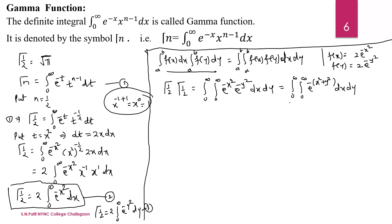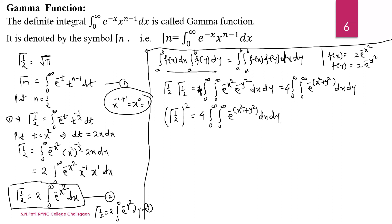In the left-hand side we have gamma of 1/2 squared. With the factor of 2 times 2 giving 4, we get: gamma of 1/2 squared equals 4 times the double integral from 0 to infinity, 0 to infinity, of e to the power minus (x squared plus y squared) dx dy. The limits indicate the positive quadrant. Call this equation number 4.